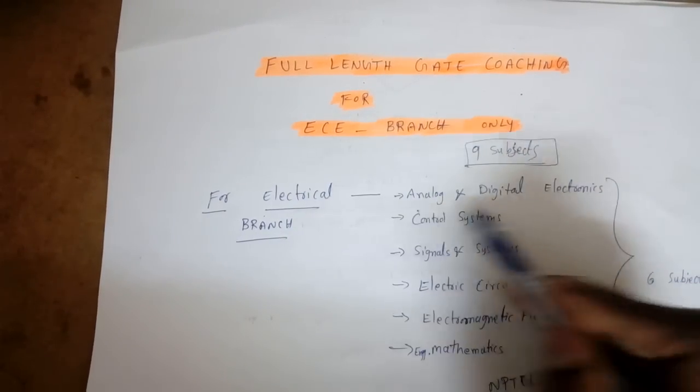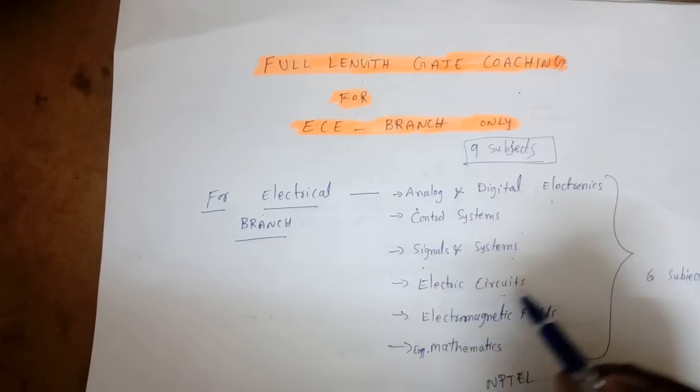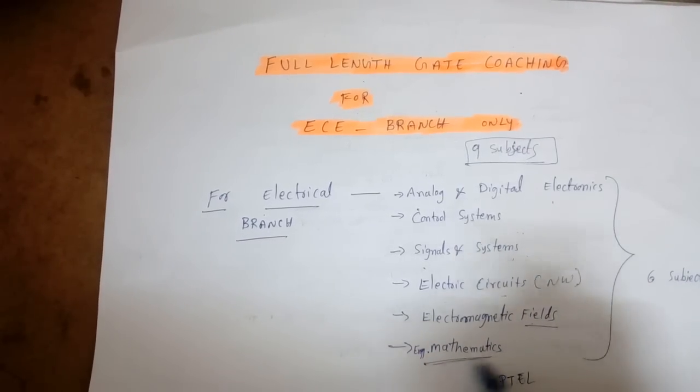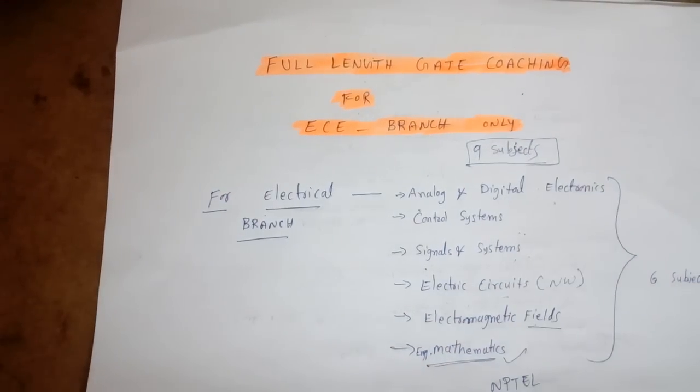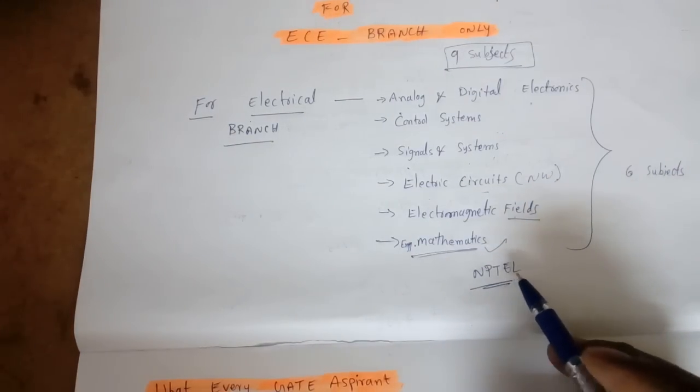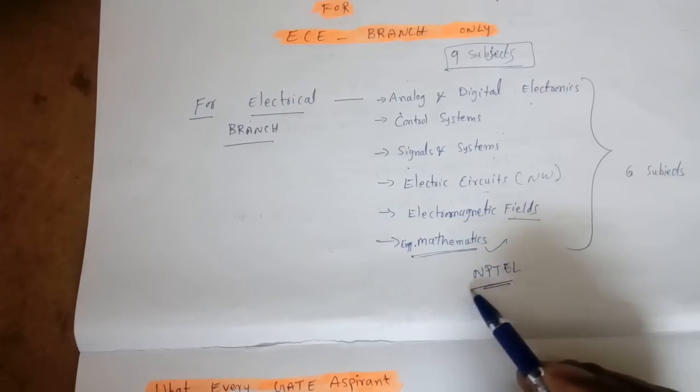For electrical branch, when we teach the nine subjects, it will include for EEE analog and digital electronics, control systems, signals and systems, electric circuits or network theory, electromagnetic fields, and engineering mathematics. Apart from these six subjects there will be four more subjects. You can go for NPTEL sites or other online websites to learn the remaining subjects.